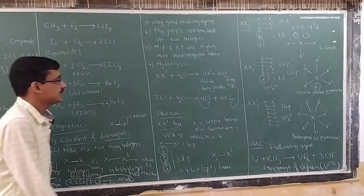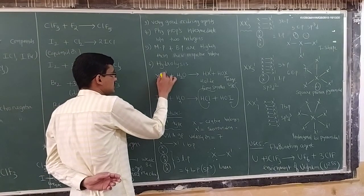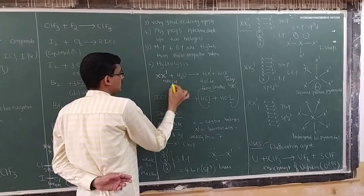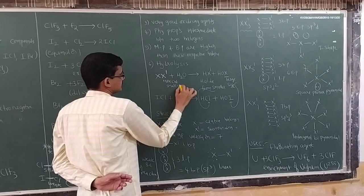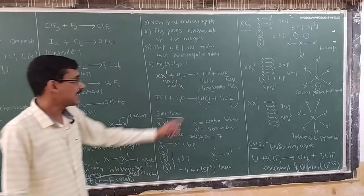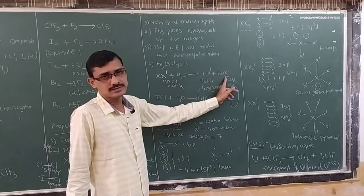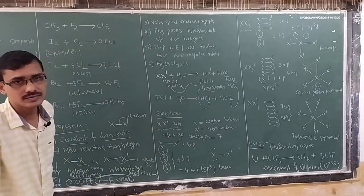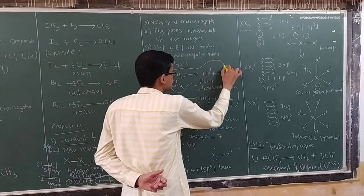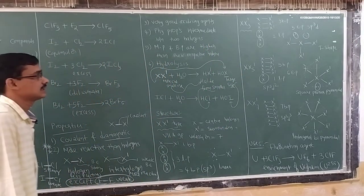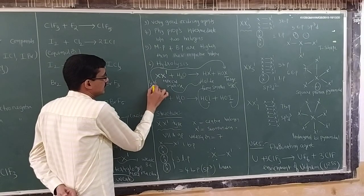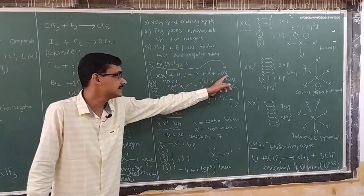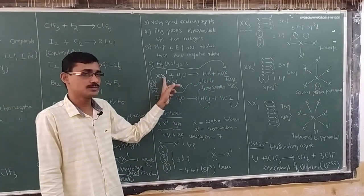An important property is the hydrolysis reaction. The central atom (X) is large in size and less electronegative, while the surrounding atom (X') is small and more electronegative. On hydrolysis, halites come from the more electronegative (smaller) atom, and hypohalites come from the less electronegative (larger) atom. The larger atom converts into hypohalites and the smaller atom converts into halites.